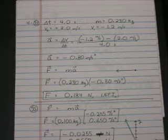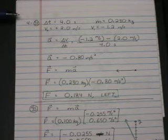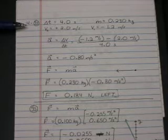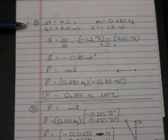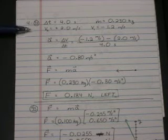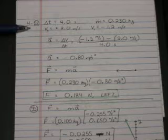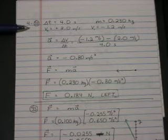We've got the time interval of 4 seconds. We have the mass, initial velocity, and final velocity. Because they're in different directions, let's make the initial velocity be positive 2 meters per second, final velocity be negative 1.2 meters per second.